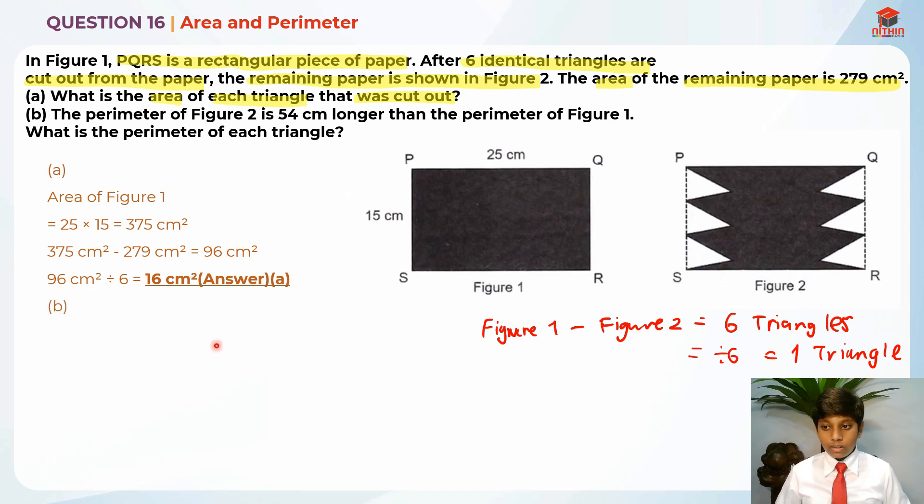Now, moving on to part B. Let's read the question. The perimeter of figure 2 is 54 cm longer than the perimeter of figure 1. What is the perimeter of each triangle? Let's highlight the key information.